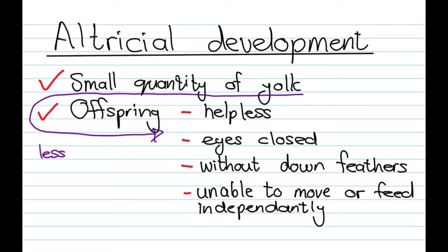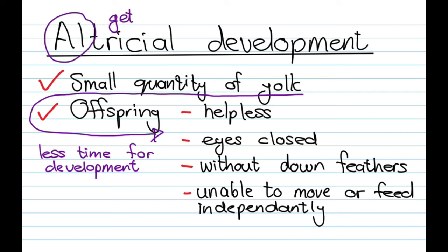Why? Because that small quantity of yolk leads to less time for development before the egg is hatched. A good way to remember this is that altricial organisms will get all of their requirements from their parents even after they have been born — meaning there is a lot of parental care.